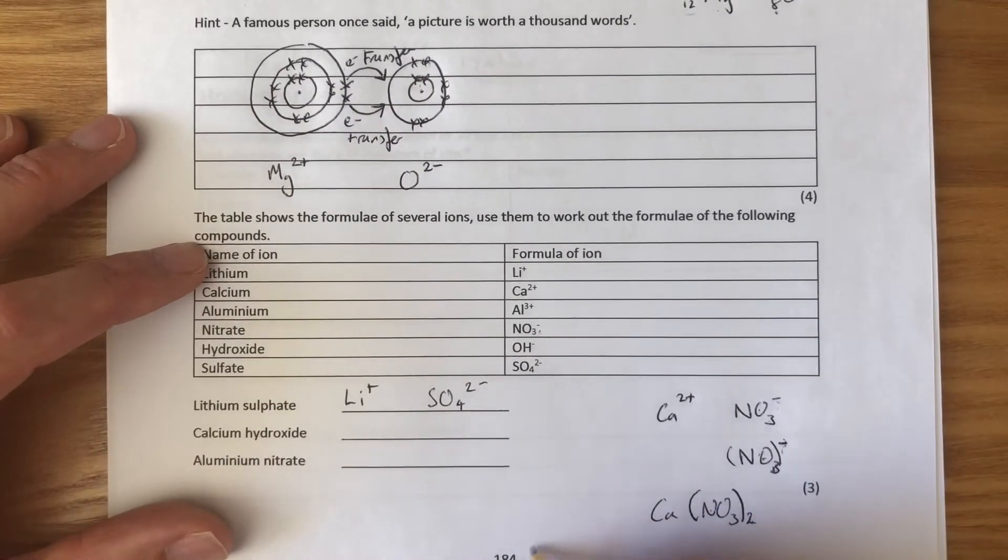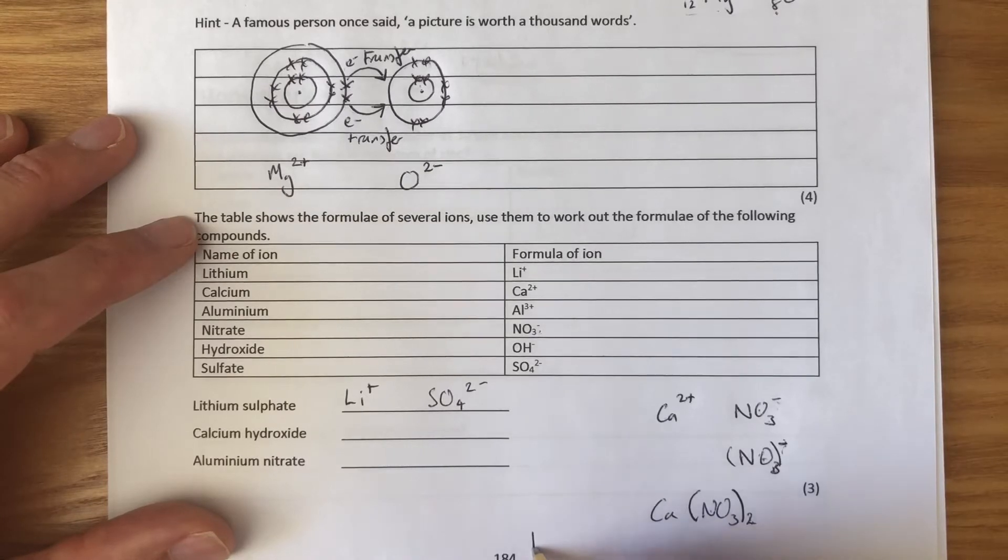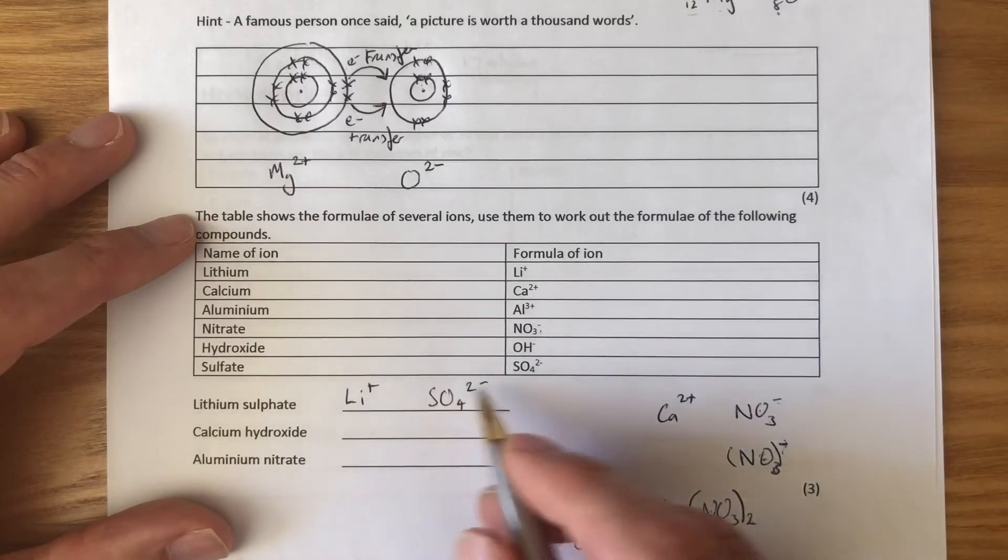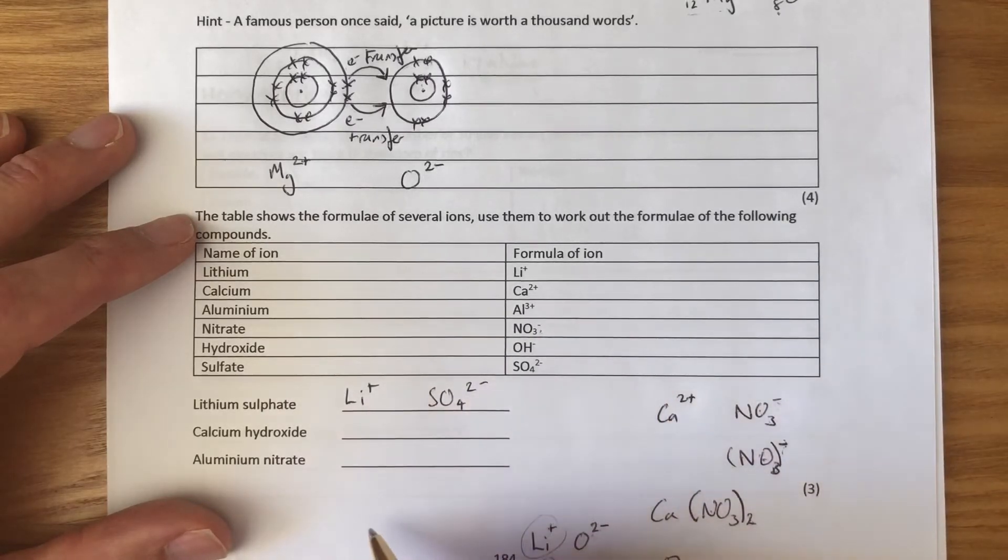If we were doing one without brackets, say, lithium oxide. We'd write Li+ and O2-. Here, do we have more positives or negatives? Here, we have more negatives, so we need more positives. So, I'm going to need to write another positive there. So, I've now got two lithiums and one oxygen. Now, we don't put brackets around lithium here because it's just one element. So, it's Li2O. We have to have the positives and negatives balancing out. And you can do those three now.